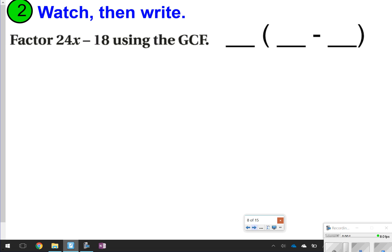This next one, you're going to just watch and then write it. It says factor 24x minus 18 using the GCF. What you need to do is write all the factors of 24 and 18 and then find the greatest common factor.